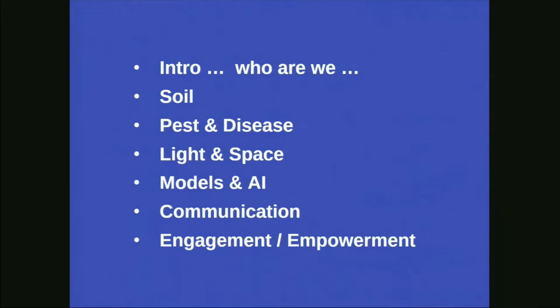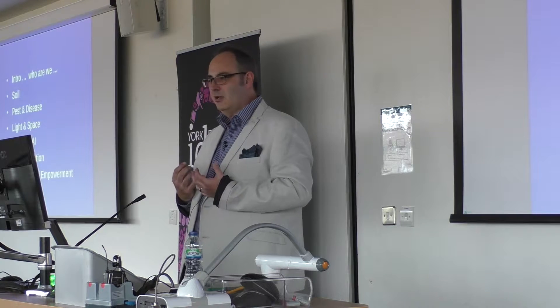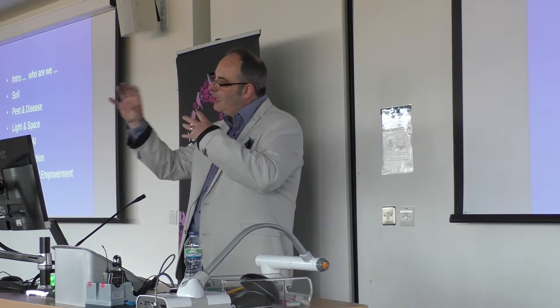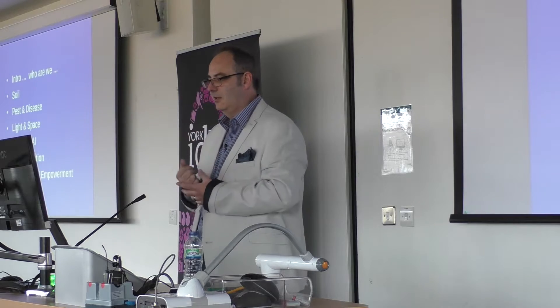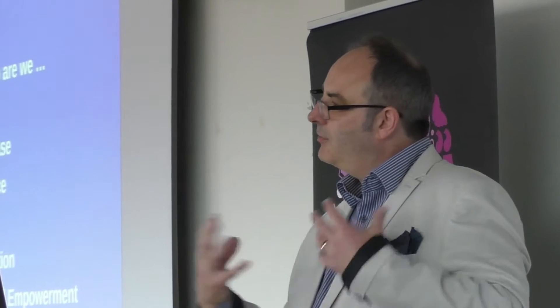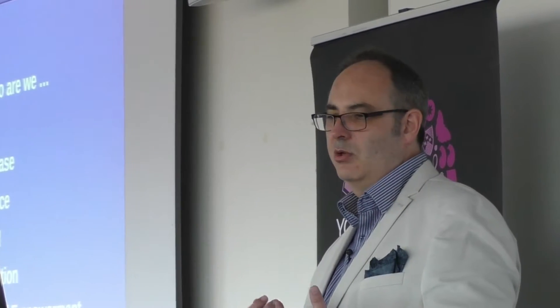I'll give a brief introduction with some background on who we are, then talk about key components important to farming in developing countries — soil, pest and disease — and how technologies link through light to give information to farmers on risks. I'll touch briefly on models and AI, which helps us know our models are working and continuously improve them, with checks and balances and a human component to keep us on track.